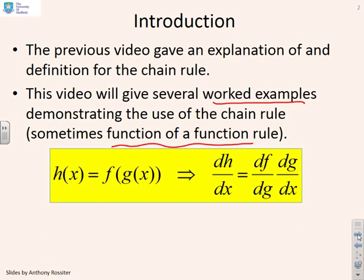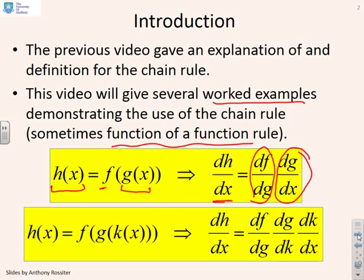So here's an example. If you have a function h of x, which is a function f of another function g of x, then dh/dx is given by df/dg multiplied by dg/dx. Or, in fact, if you have higher levels of nesting, so here you see f is a function of g and g is a function of k, then dh/dx will be df/dg times dg/dk times dk/dx.